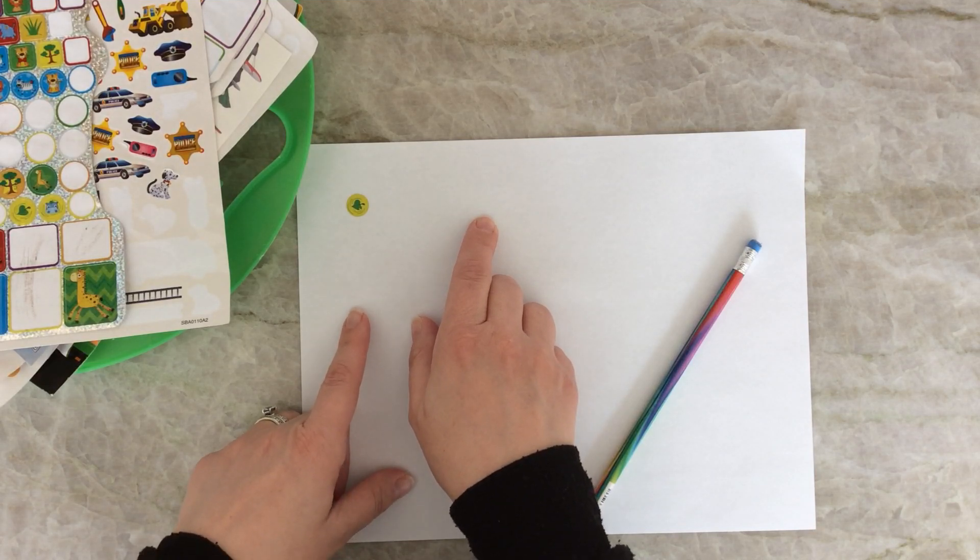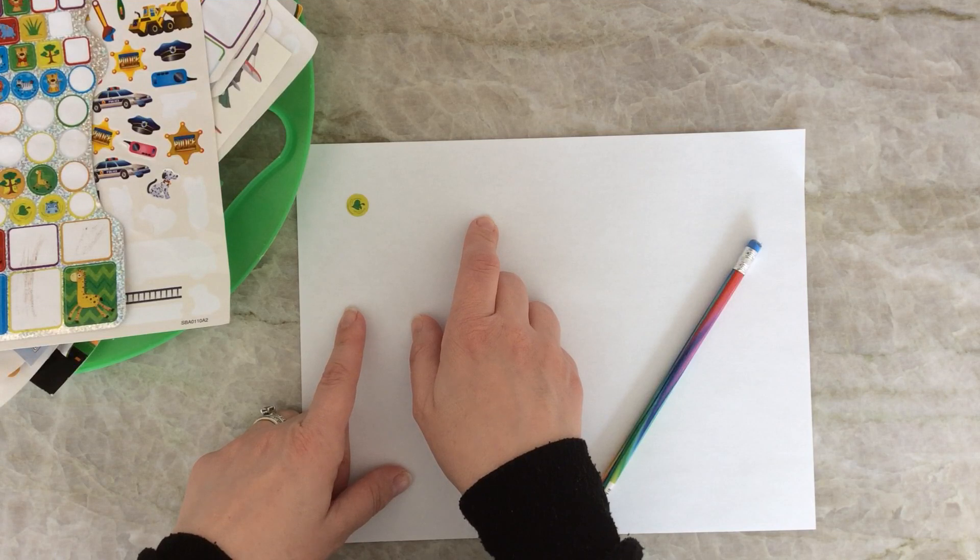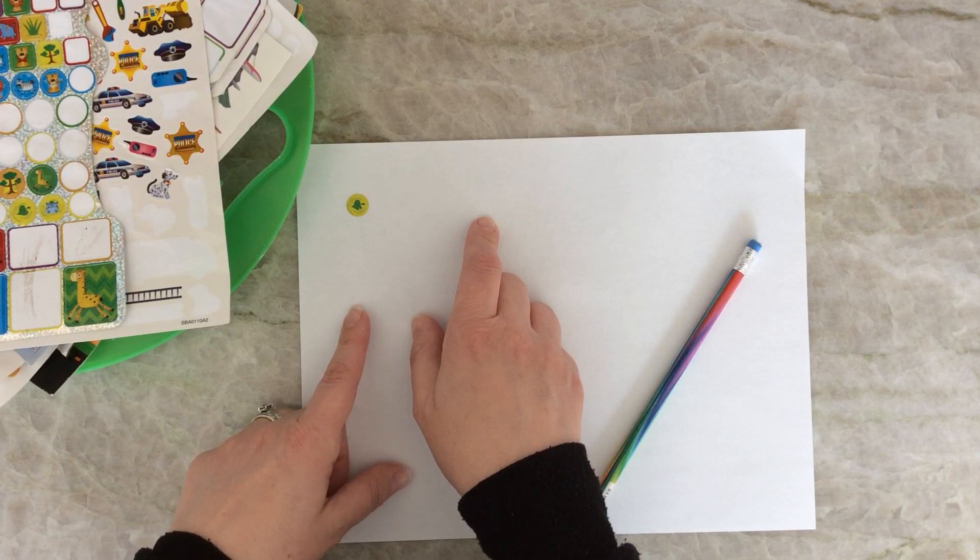What we're going to do is we're going to write the word leaf. I want you to say the word slowly, listen to all the sounds that you hear, and write them down. And parents, it might not look exactly the way the word is spelled, but that's okay. That's how we learn how to write in kindergarten.